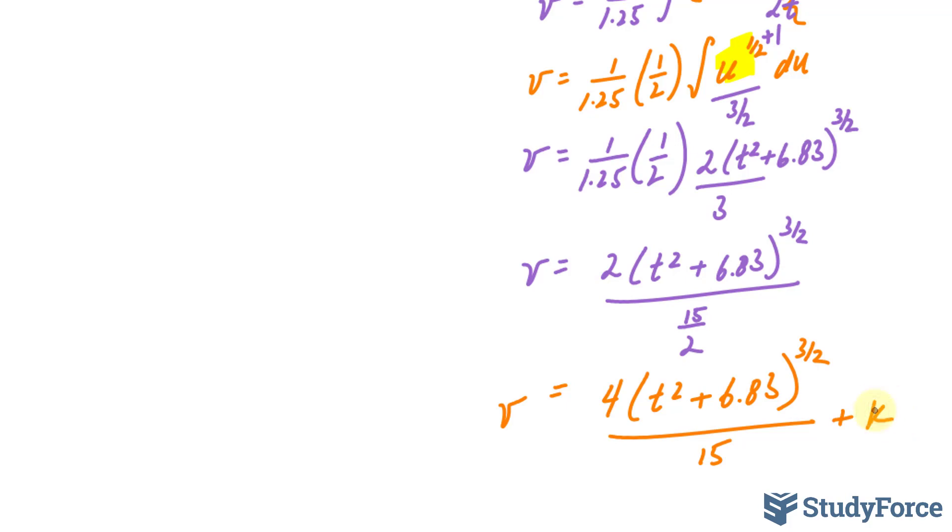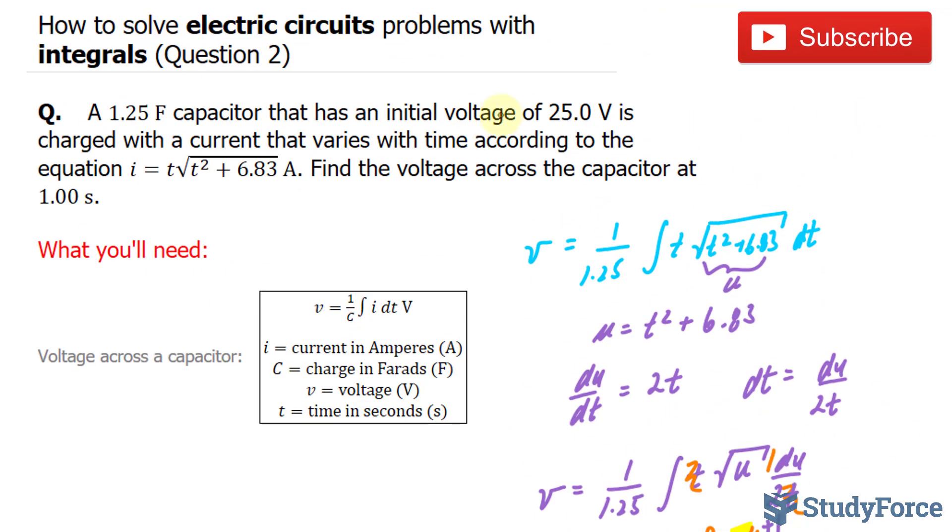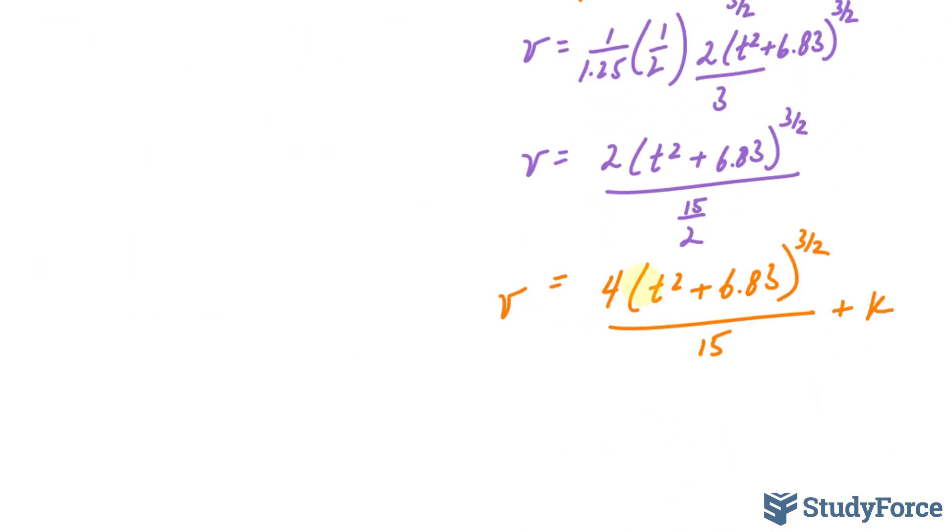Now I need to find this constant. And the way I can do that is by substituting v is equal to 25, and we were told originally that voltage is 25 initially. So I'll substitute t is equal to 0 and v is equal to 25 into here.